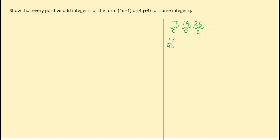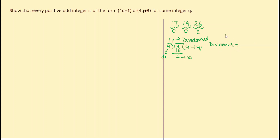For 17 ÷ 4: quotient is 4, remainder is 1. By Euclid's Division Lemma: 17 = 4×4 + 1. This expression satisfies the lemma and gives the remainder as 1, which is an odd number.